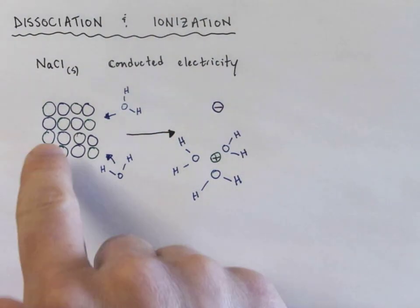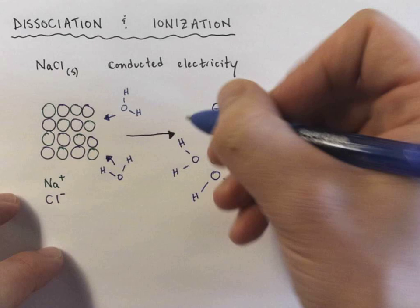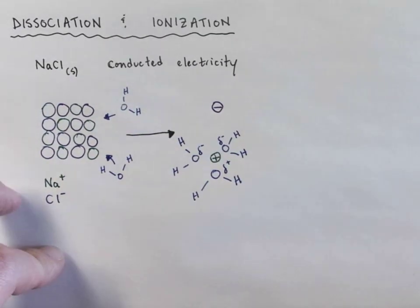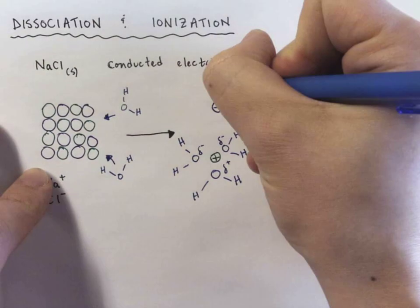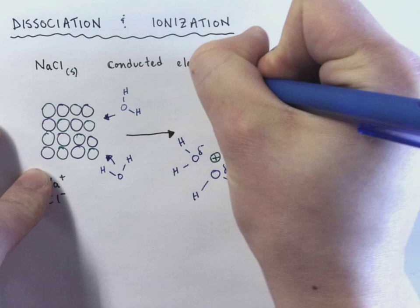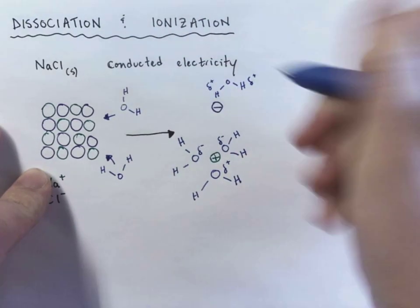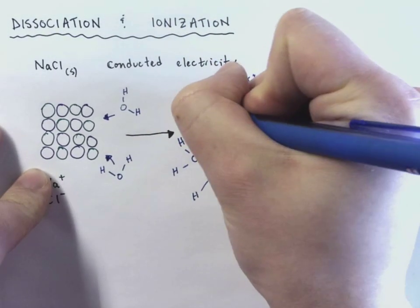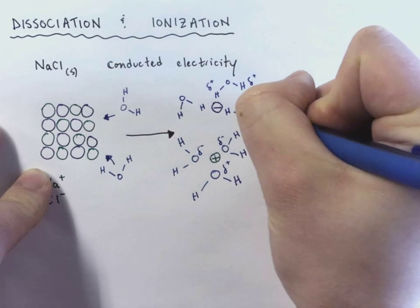And I might actually go back in and add positive and negatives to our crystal lattice. So slightly negative oxygens orient themselves around the positive sodium ion, and then the slightly positive hydrogen on water will orient towards the negative chloride ions like this.